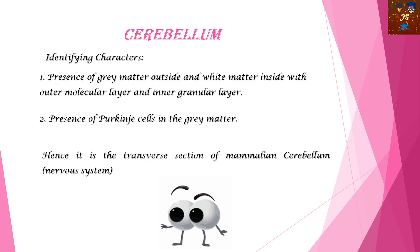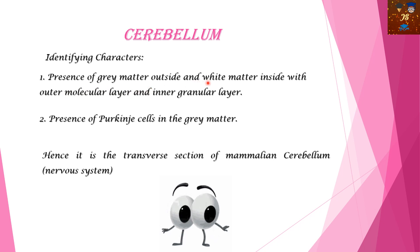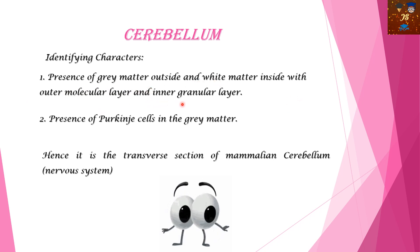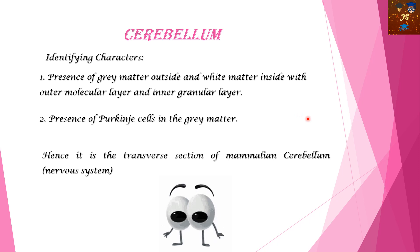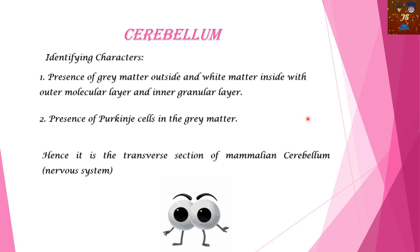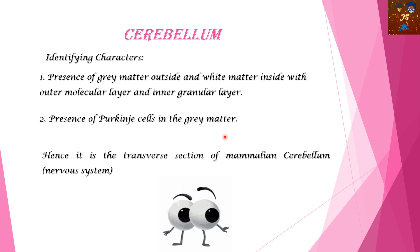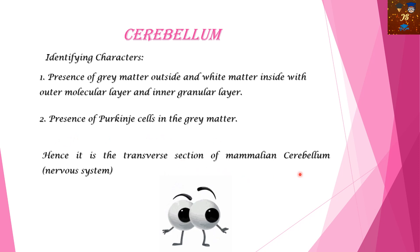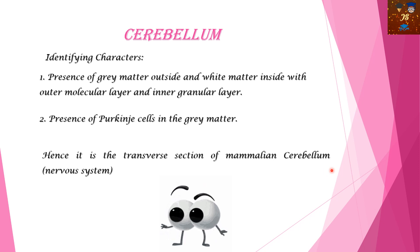Here are the identifying characters for cerebellum: presence of gray matter outside and white matter inside, with an outer molecular layer and inner granular layer, and the presence of a Purkinje cell layer in between. With the presence of Purkinje cells in the gray matter, it is the transverse section of the mammalian cerebellum of the nervous system.